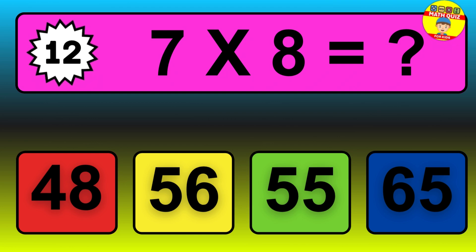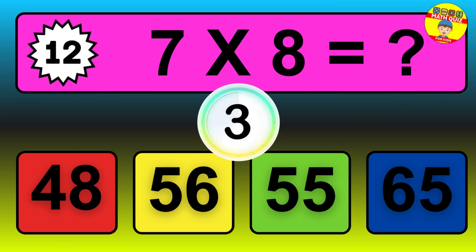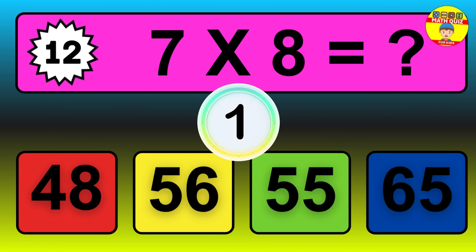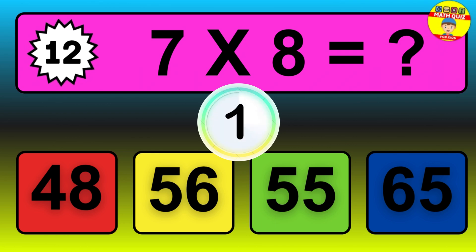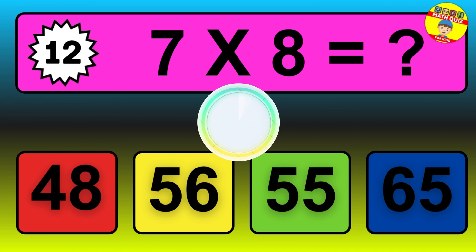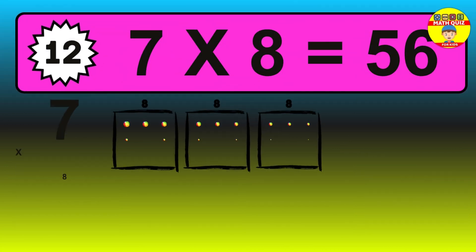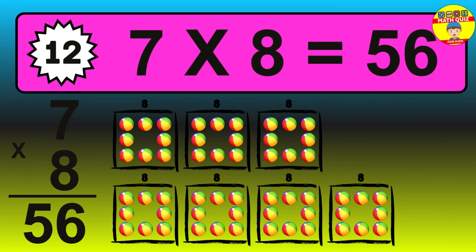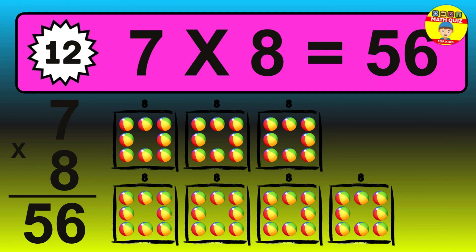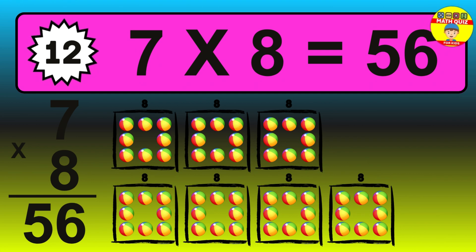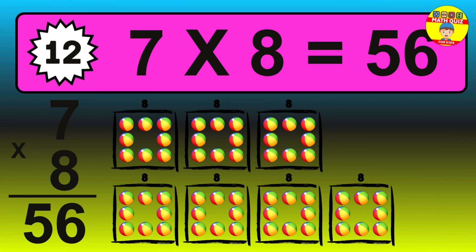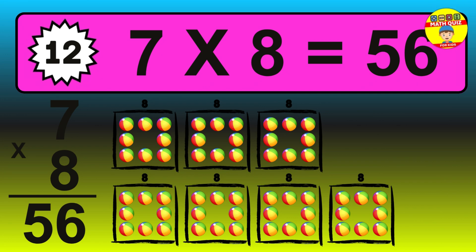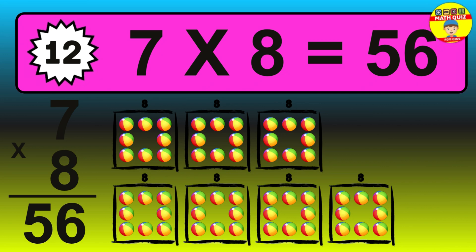Question 12. 7 times 8 equals what? The answer is 7 times 8 is 56. To calculate, we have 7 groups with 8 balls each one. So, how many balls do we have? 56 balls.